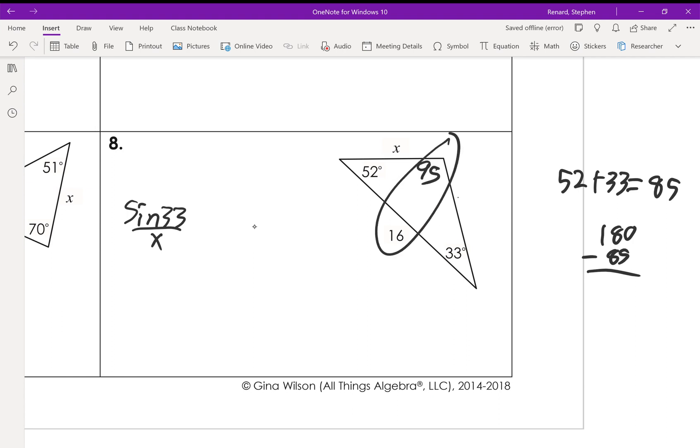So, now we can match these two up. So, this is going to be the sine of 95 over 16. Cross-multiply, divide by the sine of 95.